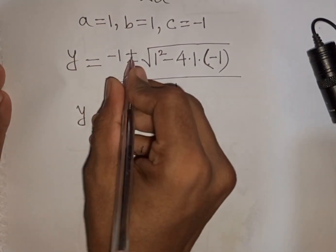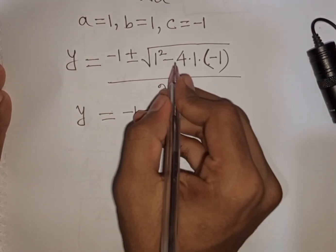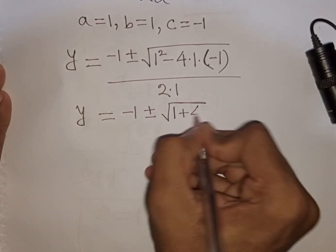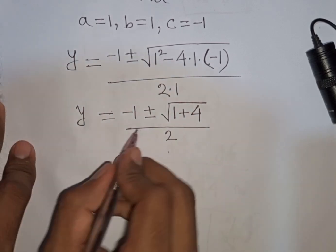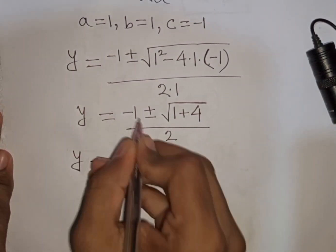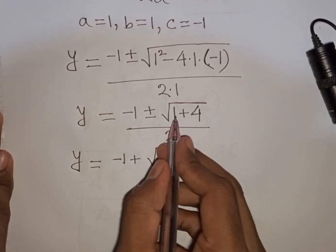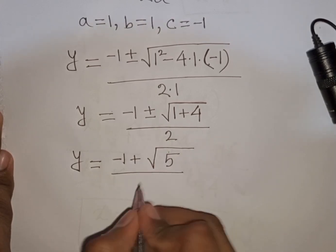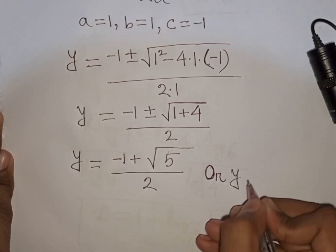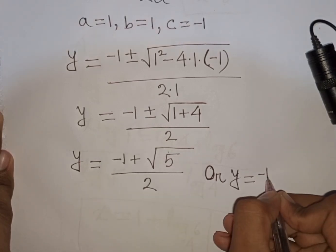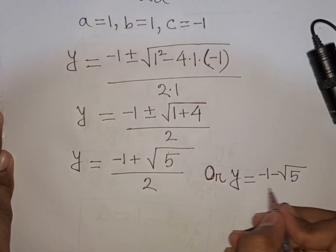So y equals negative 1 plus or minus square root of 1 squared minus 4 times 1 times negative 1, divided by 2. This gives y equals negative 1 plus square root of 5 all over 2, or y equals negative 1 minus square root of 5 all over 2.